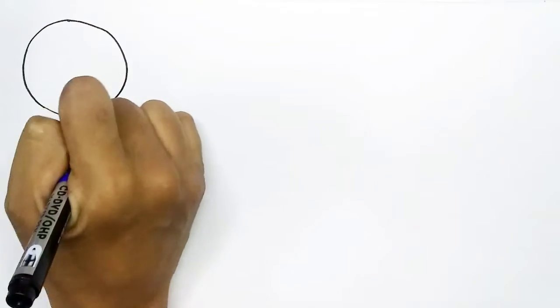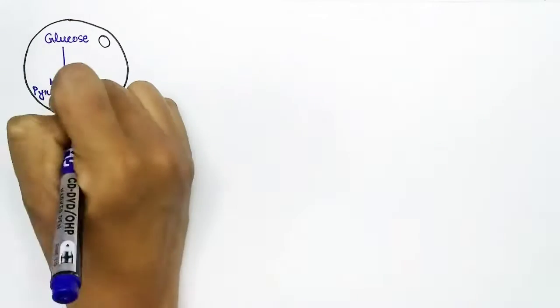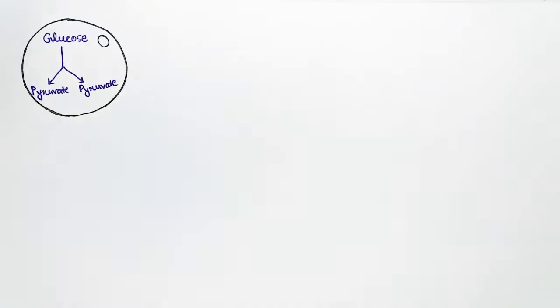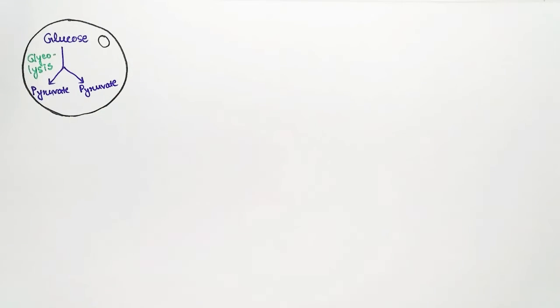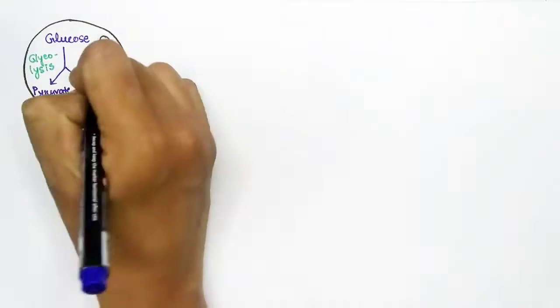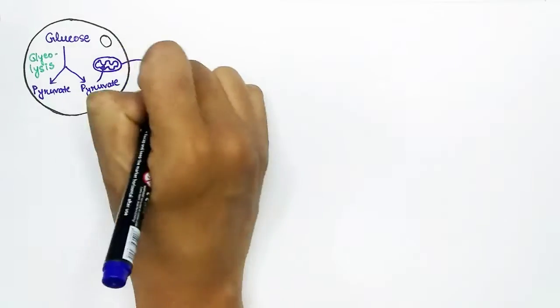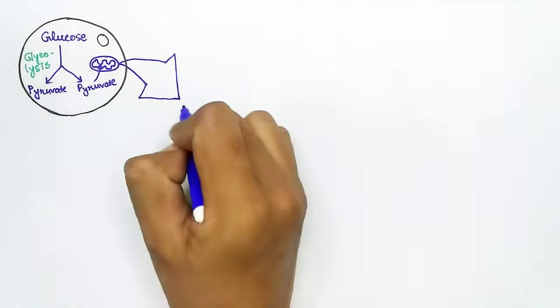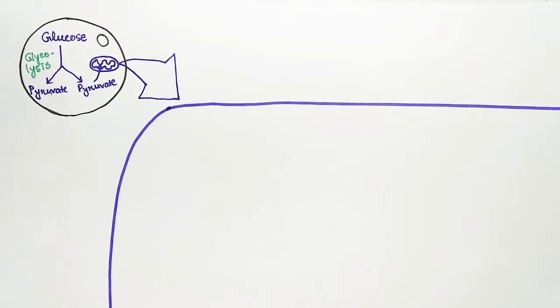In this video we will talk about the electron transport chain, which is a part of aerobic cellular respiration. When glucose enters a cell it goes through the glycolysis pathway and breaks down into pyruvate molecules. Then pyruvate will enter into the mitochondria, and in the matrix of mitochondria it will go through another pathway called the Krebs cycle.